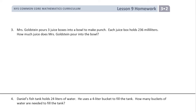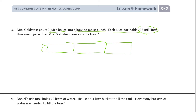Number three: Mrs. Goldstein pours three juice boxes into a bowl to make punch. Each juice box holds 236 milliliters. How much juice does Mrs. Goldstein pour into the bowl? So it's three juice boxes, each one with 236 ml — 236, 236, 236. There are a lot of ways to look at this.